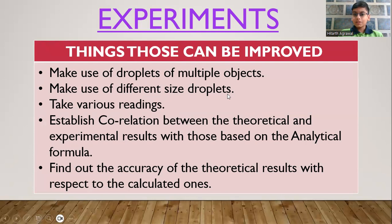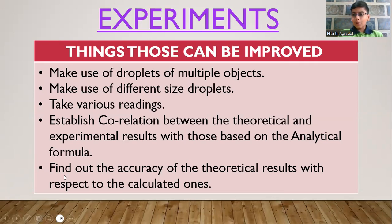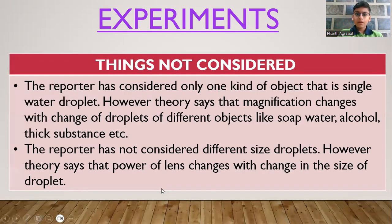Then, make use of different size droplets, since magnification changes with droplet size. Take various readings to ensure more accurate results. Also, establish a correlation between theoretical and experimental results based on analytical formulas — she should provide a mathematical analysis for everything found, such as focal length, and use that to build the correlation and assess the accuracy of theoretical results against calculated ones.